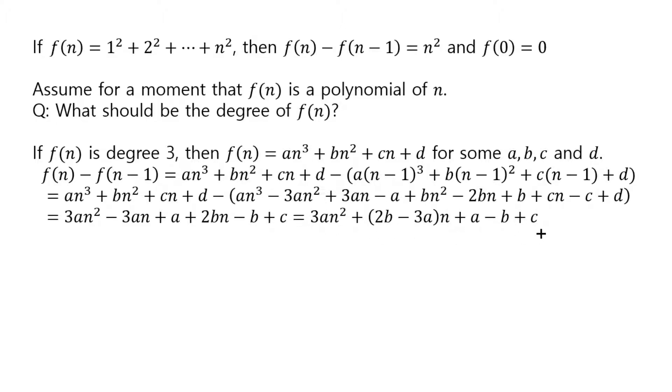Now it makes sense to be able to set this equal to n squared. In fact, if you let 3a to be 1, 2b minus 3a to be 0, and a minus b plus c equals to 0, then that's exactly n squared.